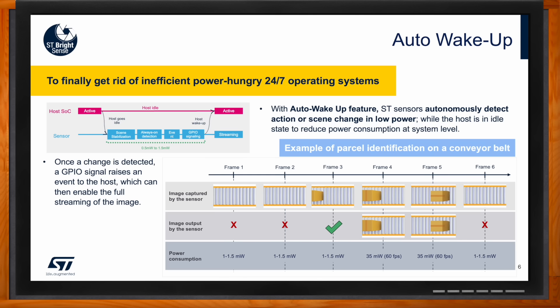After the object or person moves away and consecutive frames show no more change, the sensor goes back to sleep mode at around 1 milliwatt power consumption. This is very useful for security cameras, doorbells, and other applications where you want to reduce power consumption and avoid always-on operation. With this sensor you can save a lot of power.